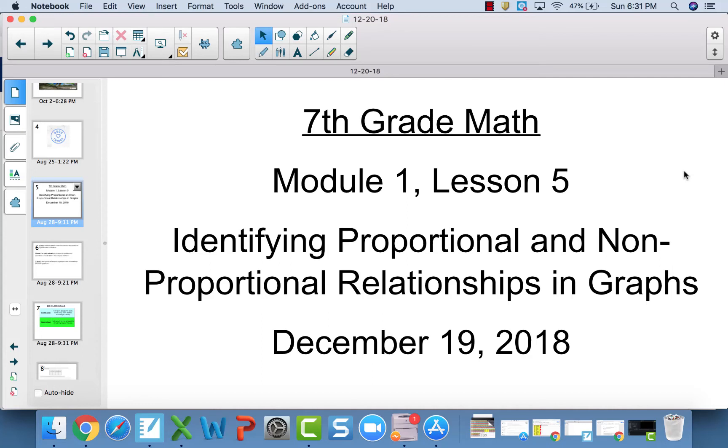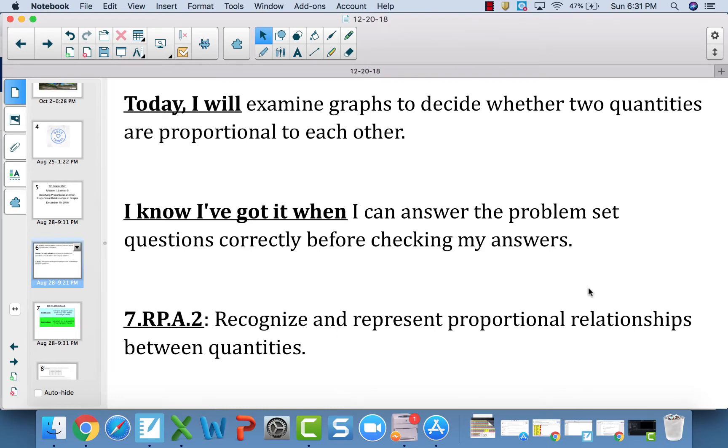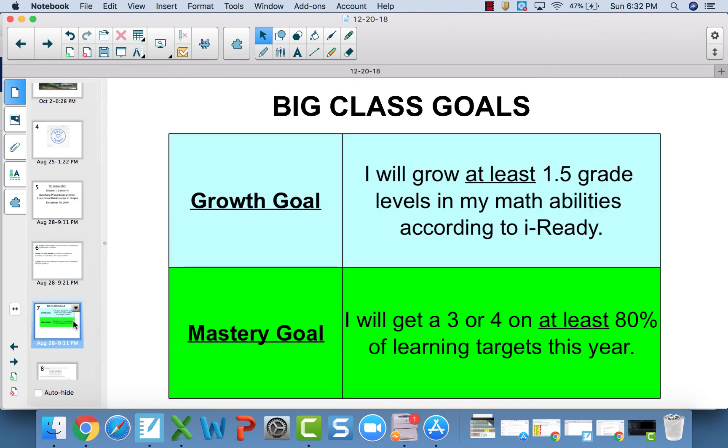This video takes a look at Module 1, Lesson 5, which transitions to looking at proportional and non-proportional relationships in graphs. Today you're going to examine graphs to decide whether two quantities are proportional to each other. The learning target or standard is to recognize and represent proportional relationships between quantities.